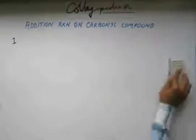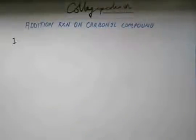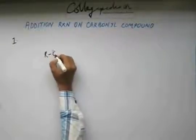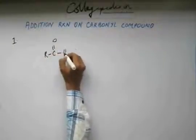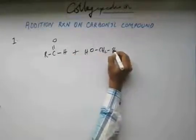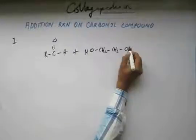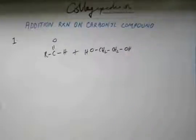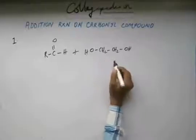Now the acetal that we have formed, that is acyclic open chain, could be cyclic as well. Suppose I take this aldehyde and ethylene glycol. This is ethylene glycol. The IUPAC name will be ethane-1,2-diol.